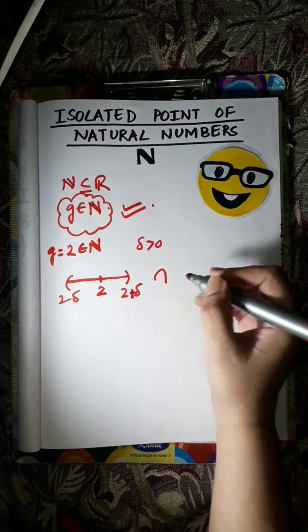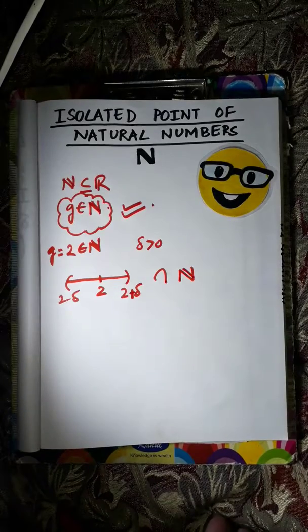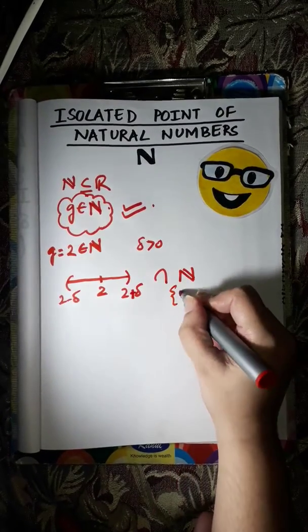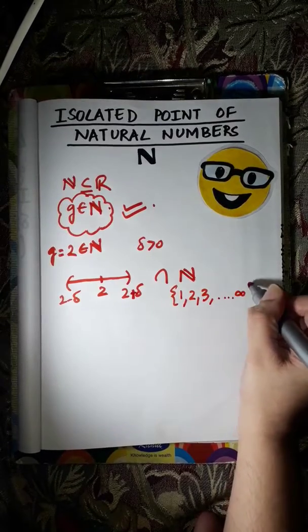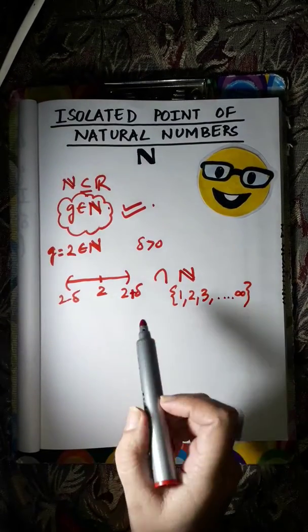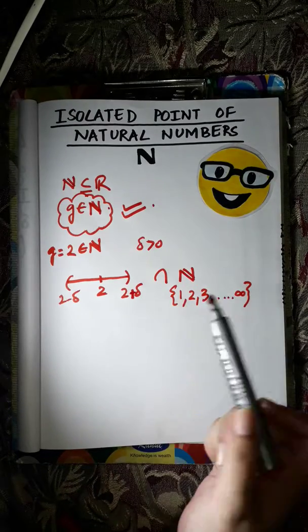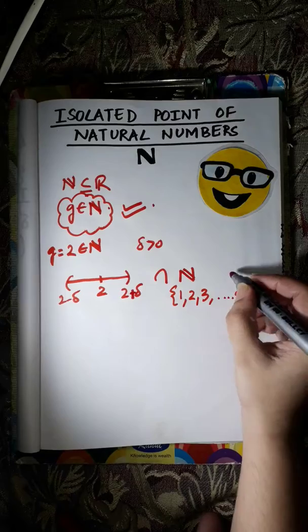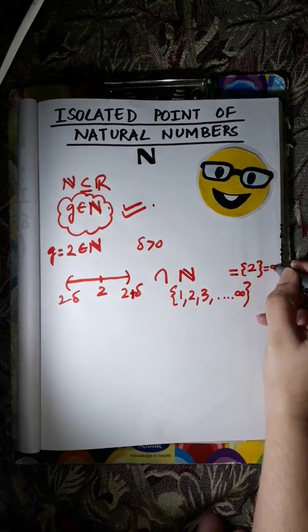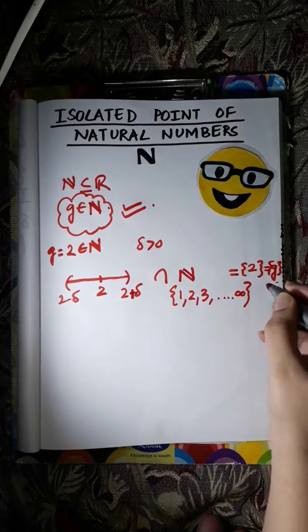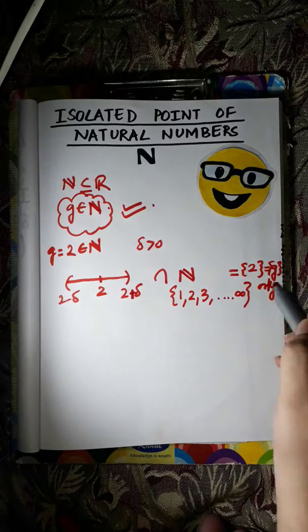Take intersection with the subset of real numbers, that means natural numbers. And natural numbers are starting from 1 till infinity. So what is the intersection of these two coming out to be? It equals 2 only, which equals G, and since it is only 2, means only G.